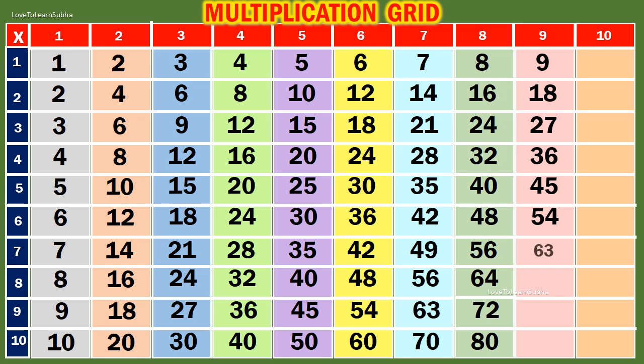9 7s are 63. 9 nines are 81. 9 tens are 90.